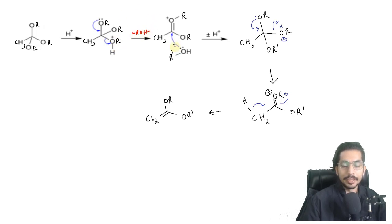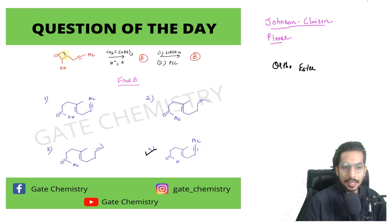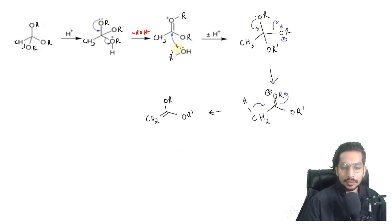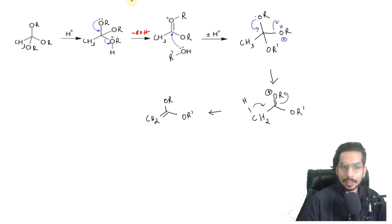In the second step, the alcohol present in the reagents — I'll call this group R-dash — attacks the electrophilic carbon, forming a tetrahedral intermediate. Then again, one of the alkoxy groups is protonated by the acid, the lone pair migrates, and another alcohol is eliminated — again minus ROH.